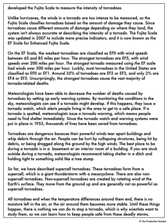On the EF Scale, the weakest tornadoes are classified as EF0, with wind speeds between 65 and 85 miles per hour. The strongest tornadoes are EF5, with wind speeds over 200 miles per hour. The strongest tornadoes measured using the EF Scale had winds over 300 miles per hour. Luckily, most tornadoes in the United States are classified as EF0 or EF1. Around 35% of tornadoes are EF2 or EF3, and only 2% are EF4 or EF5. Unsurprisingly, the strongest tornadoes cause the vast majority of tornado-related deaths.